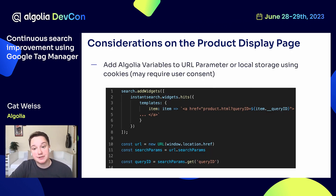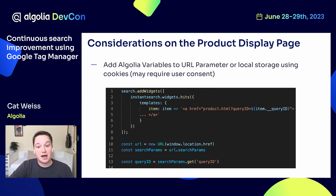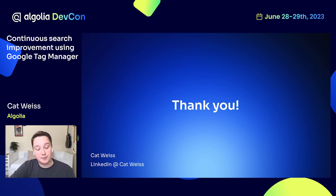One thing I did not cover today is sending a conversion event through Google Tag Manager from the product display page, or PDP. A conversion event for an Add to Cart action is very commonly done on the product display page. In this case, you'll need to use a URL parameter or a cookie pending your user's consent to keep track of the HTML attributes from the previous page. Here you can see an example of the query ID being passed via URL parameter — you would need to do this for each of the HTML elements that Google Tag Manager needs. I hope you've enjoyed this overview of implementing Google Tag Manager with Algolia. You can find me on LinkedIn at Kat Weiss. Thank you very much, have a great day.